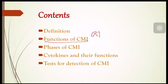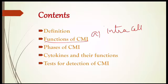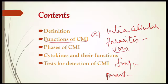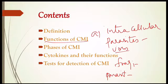CMI gives protection in infectious diseases caused by obligate and facultative intracellular parasites — microorganisms that reside inside cells. Examples of such bacteria are Mycobacterium tuberculosis, Mycobacterium leprae, Brucella, and Listeria. Examples for viruses are Smallpox, Measles, and Mumps. Fungi include Histoplasma, Blastomyces, and Coccidioides, and protozoans include Leishmania and Trypanosoma. CMI gives protection against all these intracellular parasites.